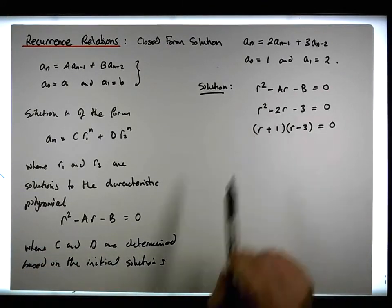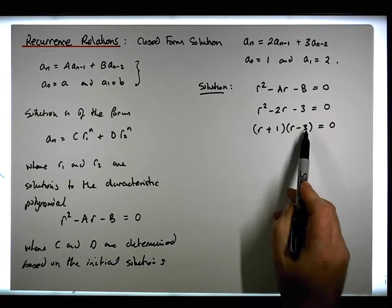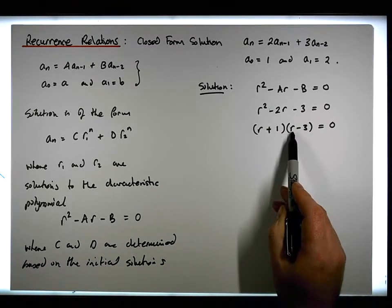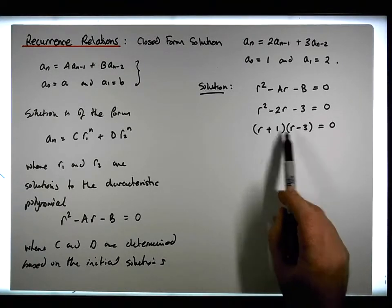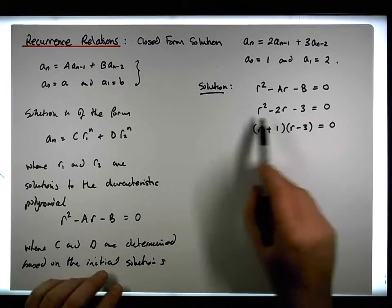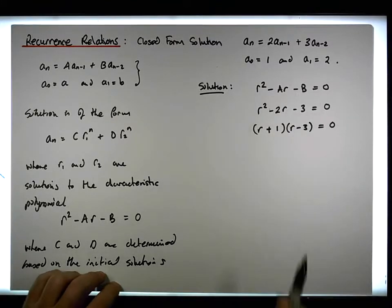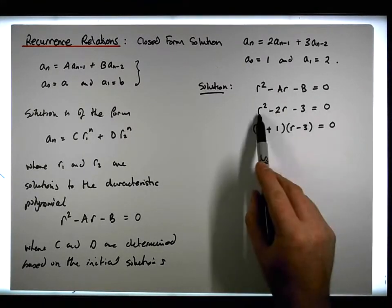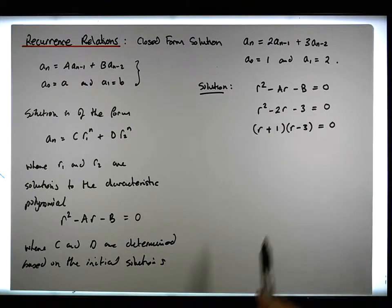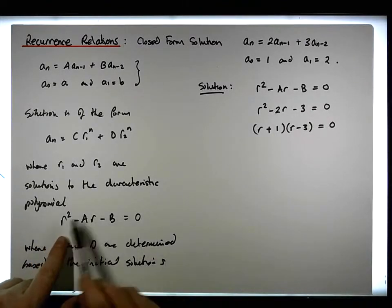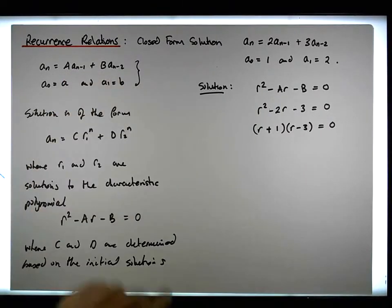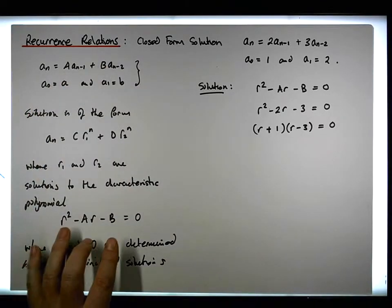We can verify: r·r gives r², r·(−3) gives −3r, (+1)·r gives +r, netting −2r, and (+1)·(−3) gives −3. So the factoring is correct. You can use whatever technique you have to factor this quadratic. Note that the characteristic polynomial is a quadratic when we have a degree 2 recurrence system; if it were a degree 3 recurrence, we would have a cubic.